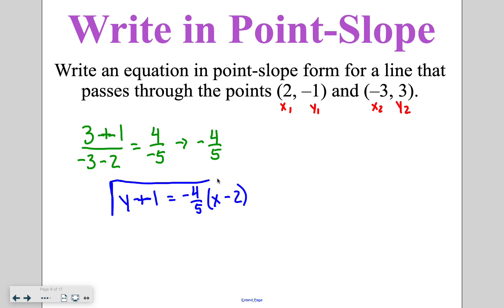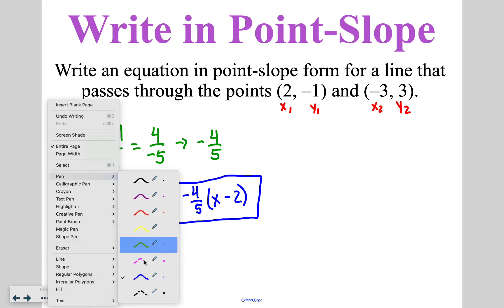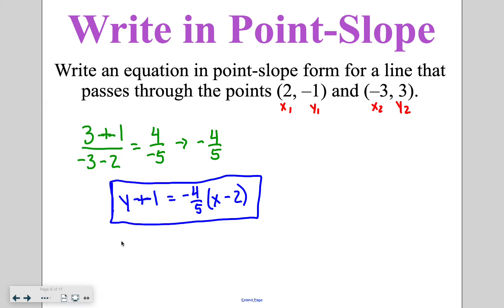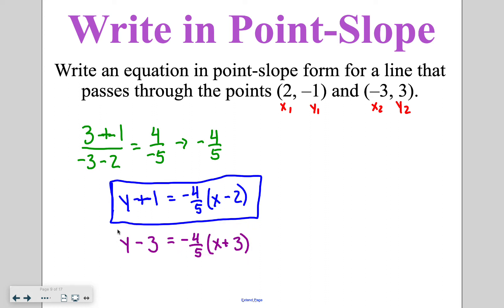That's our first option. You also could plug in the second point — I could have labeled the second coordinate as x1 and y1, giving me y minus 3 is equal to negative 4 fifths times x minus negative 3, or x plus 3. Even though these two equations look different, they both simplify to the same slope intercept form, which we'll discuss in our next lesson. For now we're just focused on writing them in point slope form.